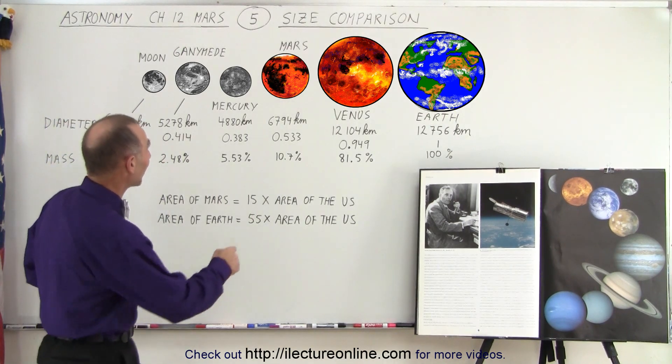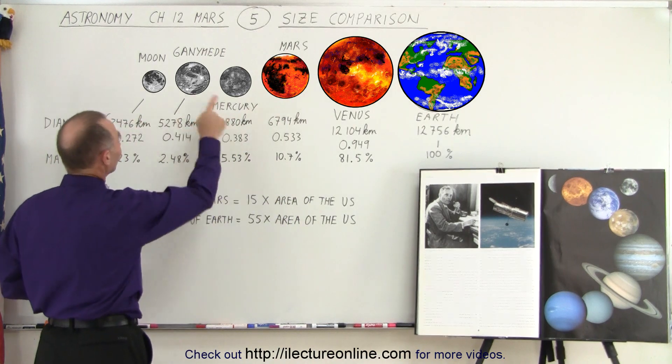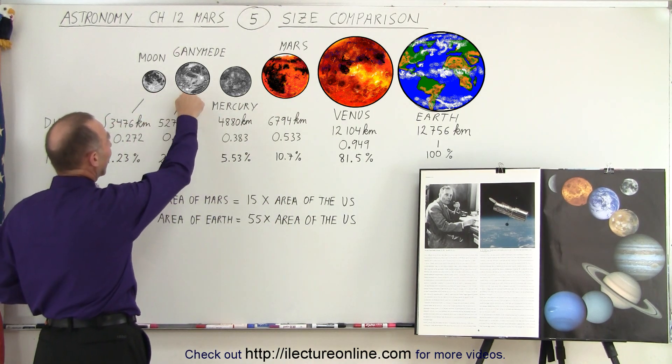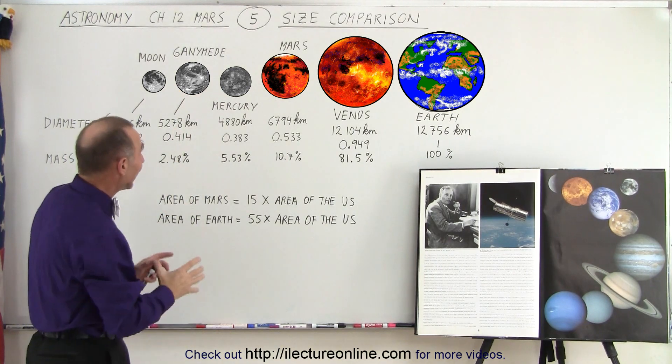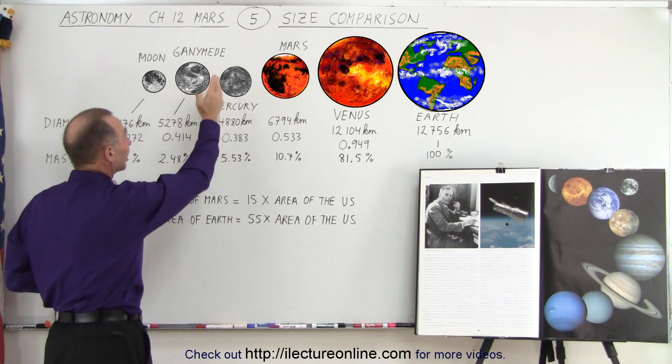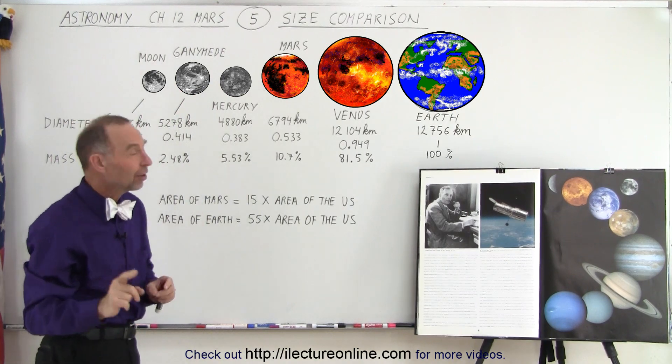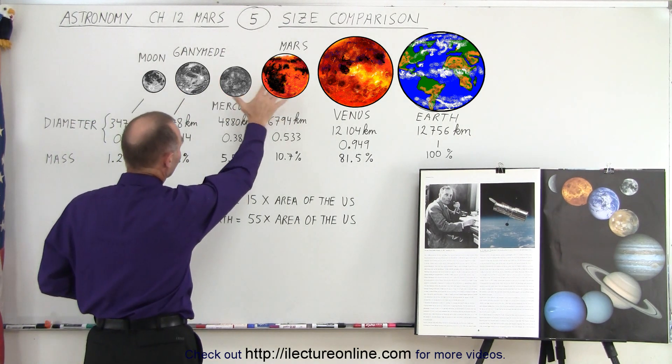So where's Mars? It's right here in the middle, kind of in the middle. And notice on the left we have the moon Ganymede, which is the largest moon in the solar system, one of the moons of Jupiter. The largest moon, meaning it's larger than the planet Mercury, but not as large as Mars. You can see the relative size.